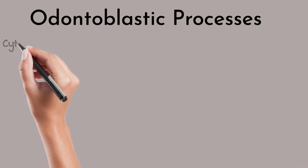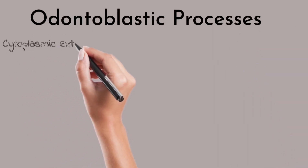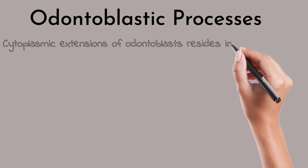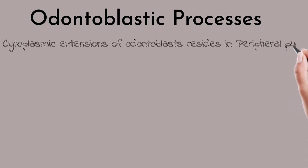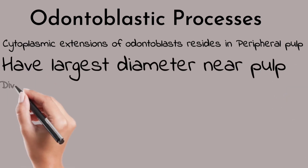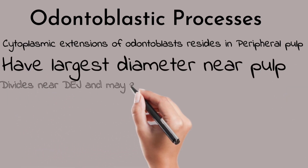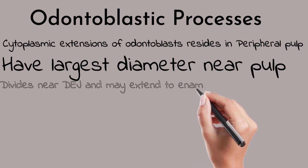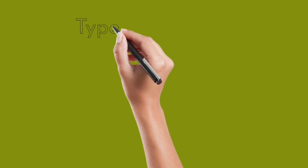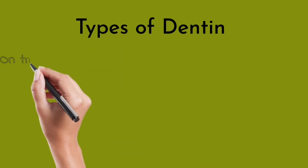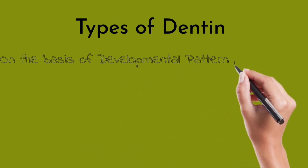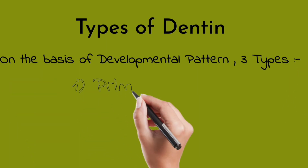Odontoblast processes are the cytoplasmic extensions of the odontoblasts, which reside in the peripheral pulp. They have the largest diameter near the pulp. Some may traverse the entire thickness of the dentine, and they divide near the dentino-enamel junction. They may also extend into the enamel in the form of enamel spindles.